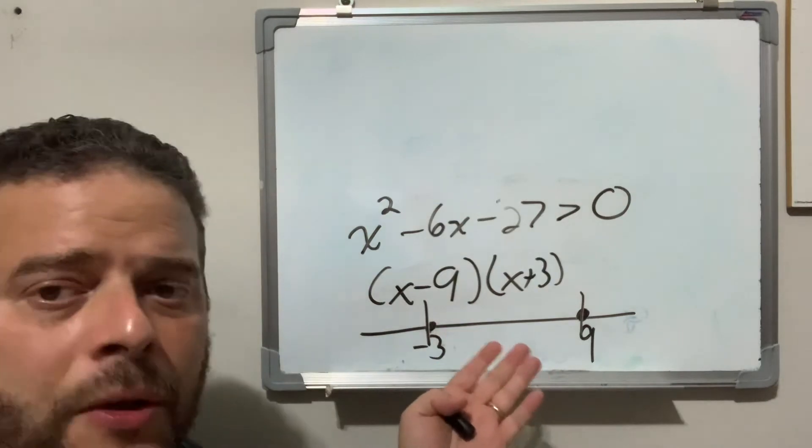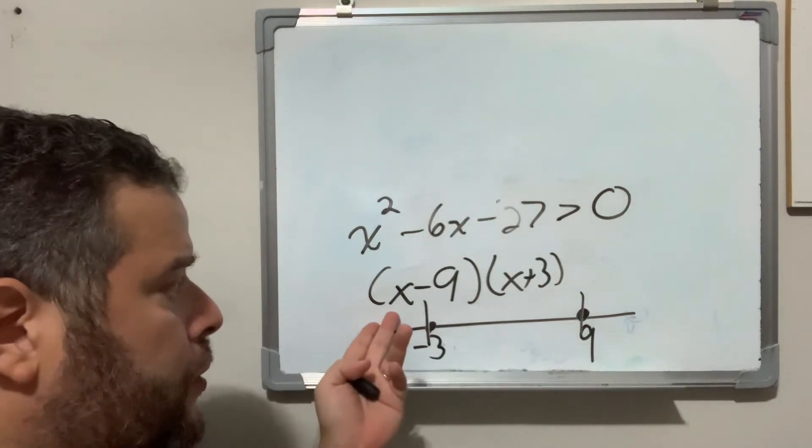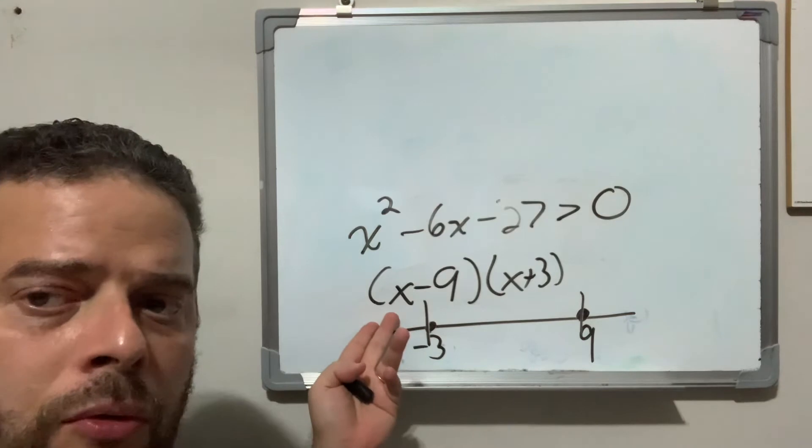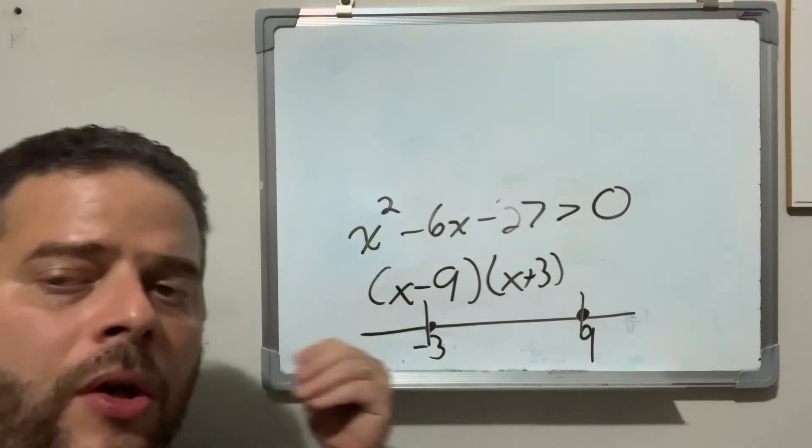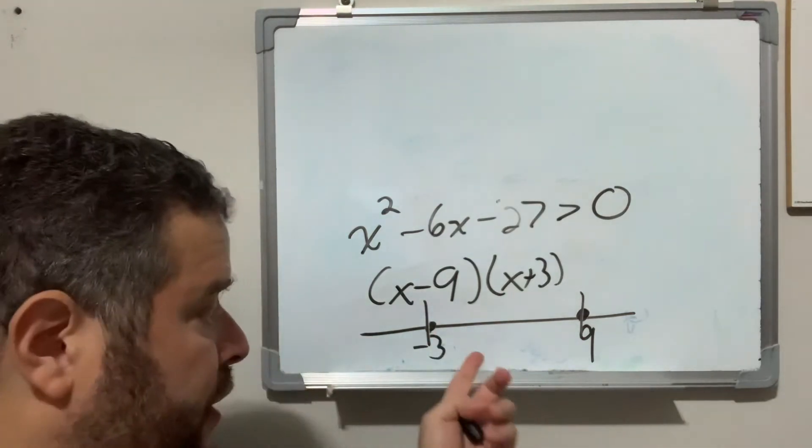And when I say values, I mean you find any single value from each zone. You pick one value from each zone. Try to use the easiest numbers.